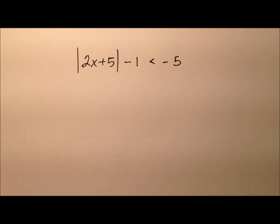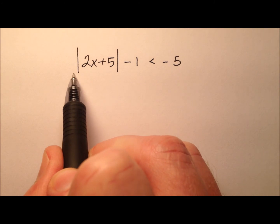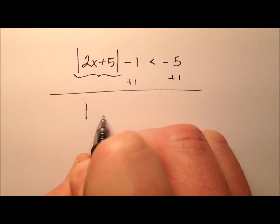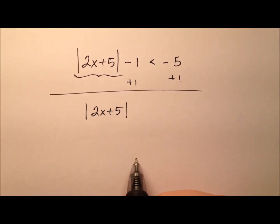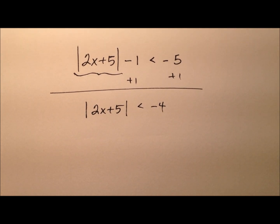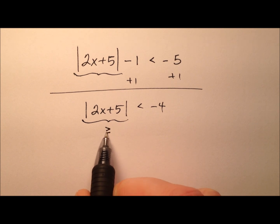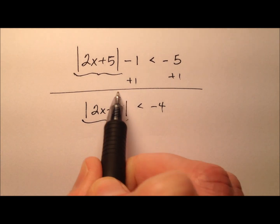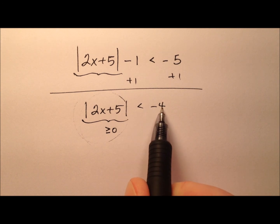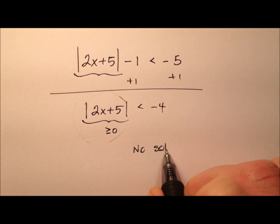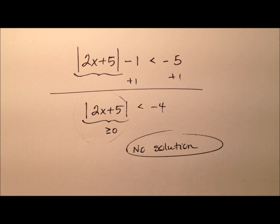In these last two examples, I want to look at special cases when solving absolute value inequalities. We're going to start by isolating the absolute value expression, so we'll add 1 to both sides. We'll have the absolute value of 2x plus 5 is less than negative 4. Absolute value expressions are always non-negative — always greater than or equal to 0 — but we're saying this absolute value expression is less than negative 4. That's never going to happen, so this is no solution.